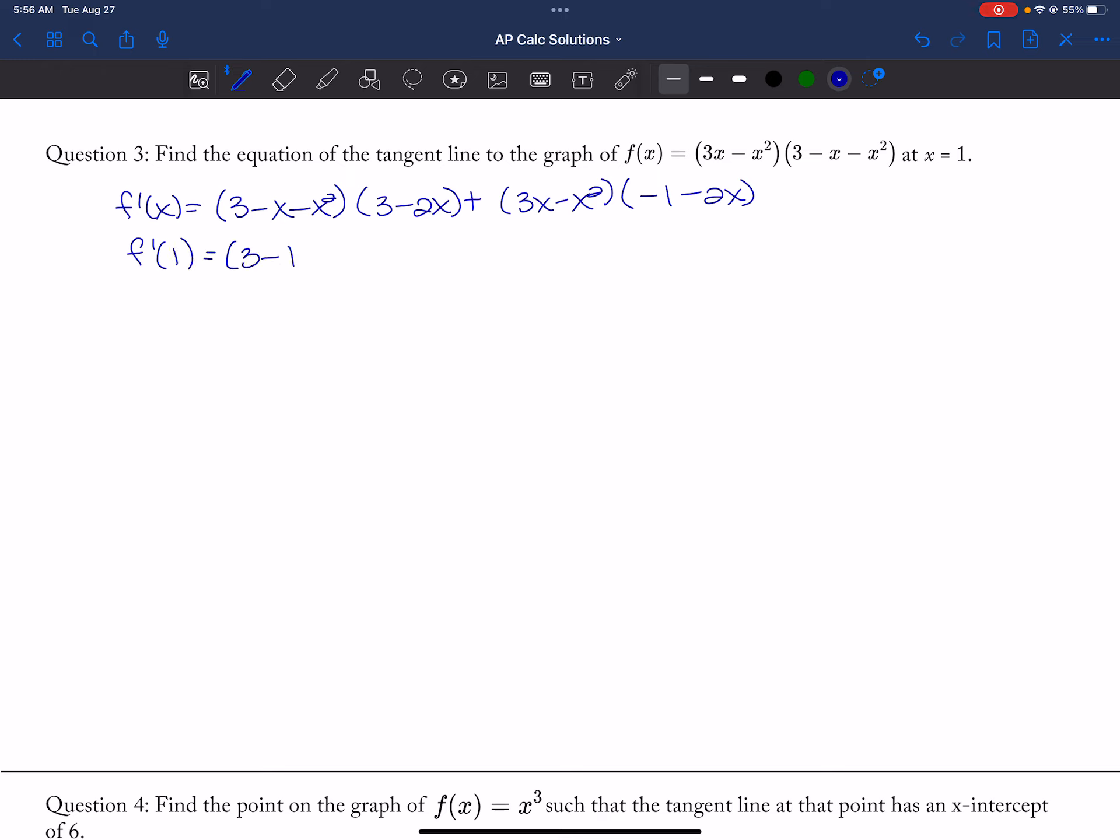I could just go ahead and plug in 1 to start off with to get my answer. So that's 3 minus 2, which is 1, so this is 1 plus 3 minus 1, which is 2, negative 3, so negative 6.